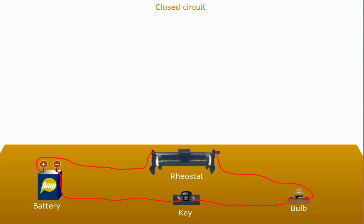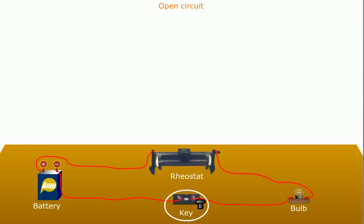You know that in a closed circuit the current has only one path to flow and hence the lamp lights up even though the lamp offers resistance to the current. But in an open circuit, current does not flow through the circuit.